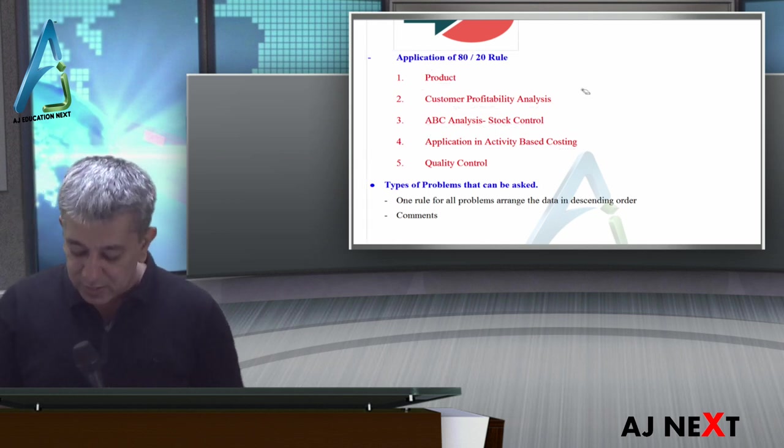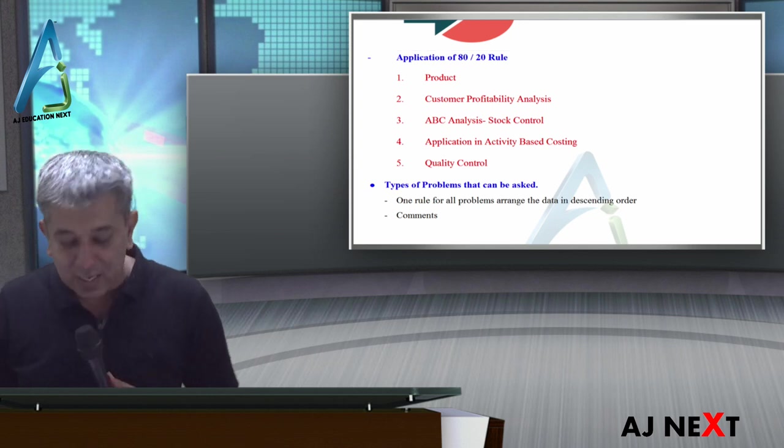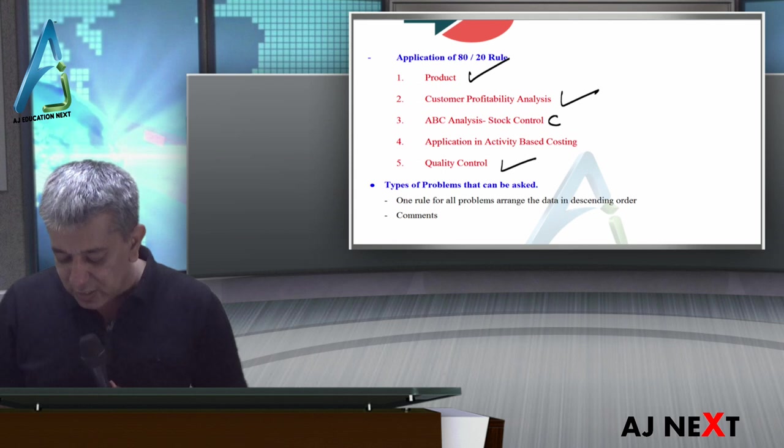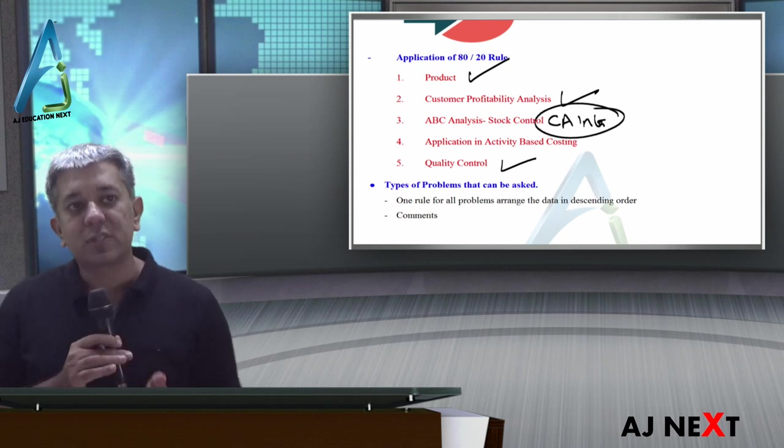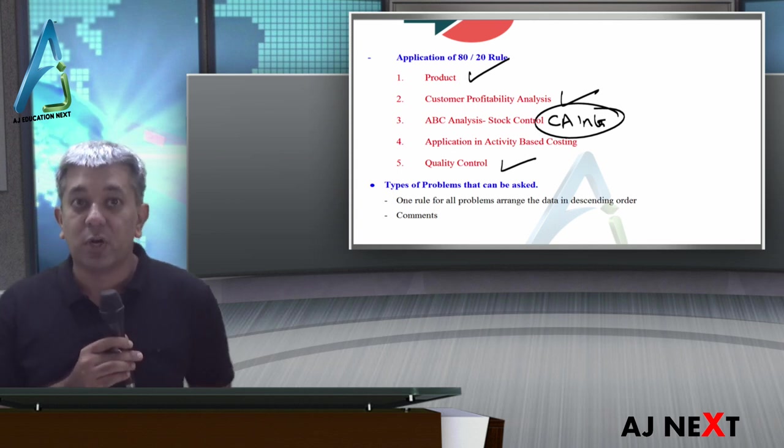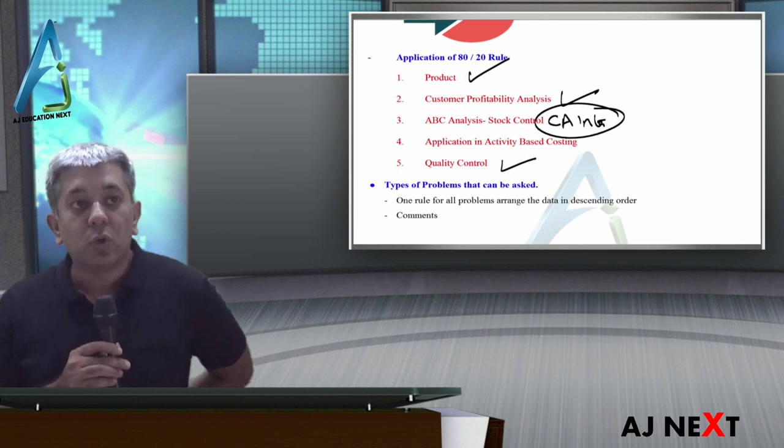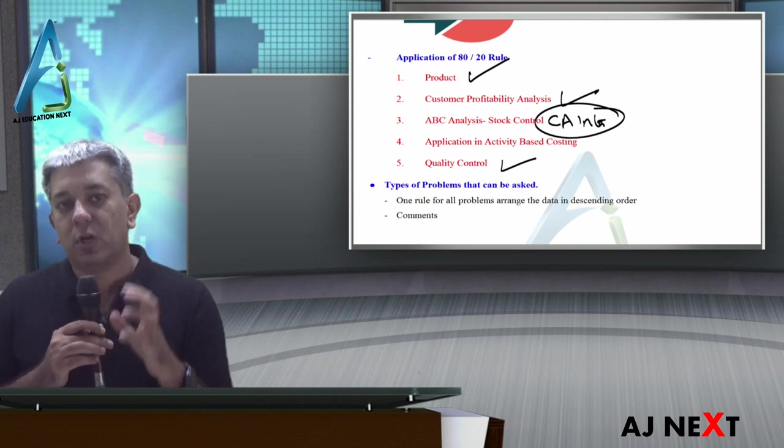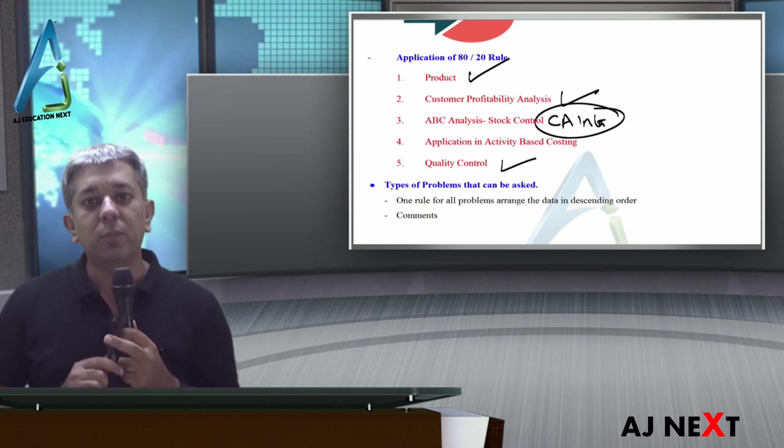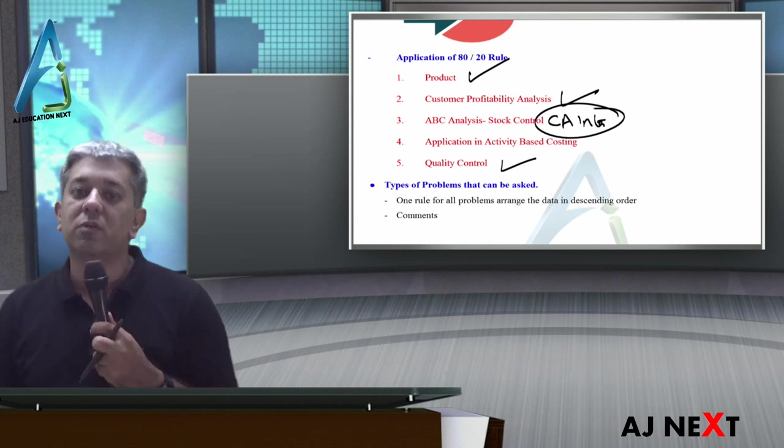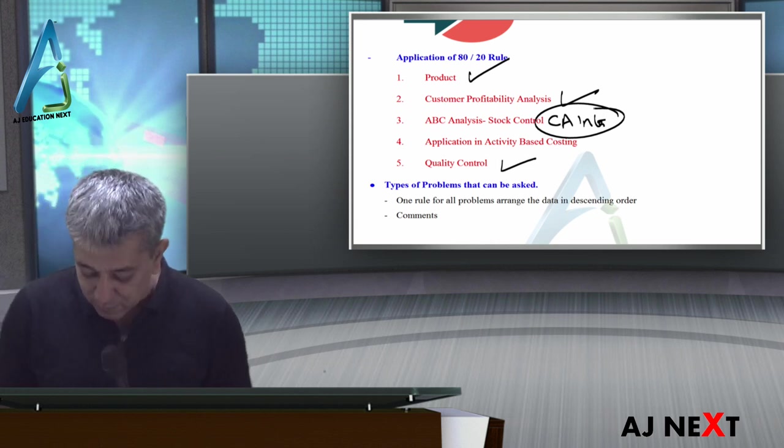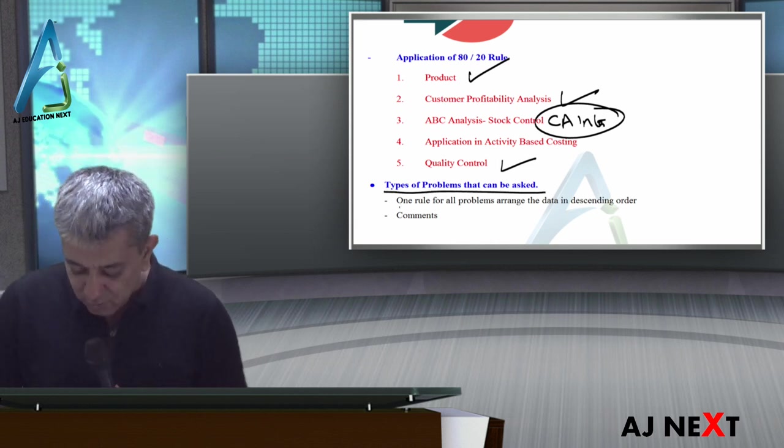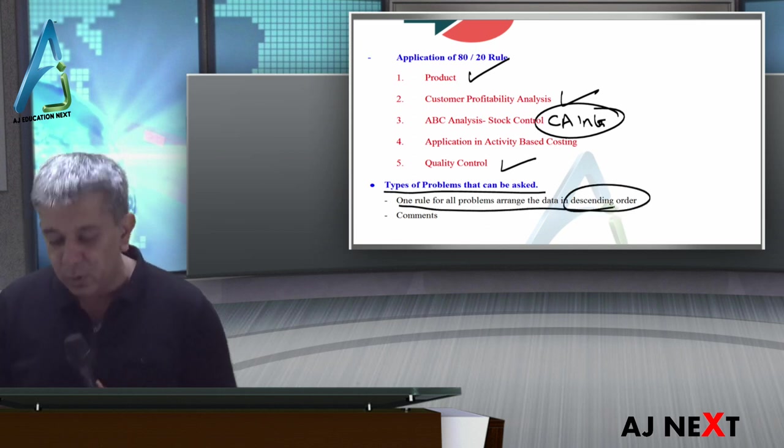In exams, the questions that can come according to me are from these areas. Because this concept already came in CA Inter. They might ask you which products are important. So what to do? This is all about which things are more important. Those things are important which occupy a huge chunk for us. For all such questions, I've written one rule here: convert the data into descending order.